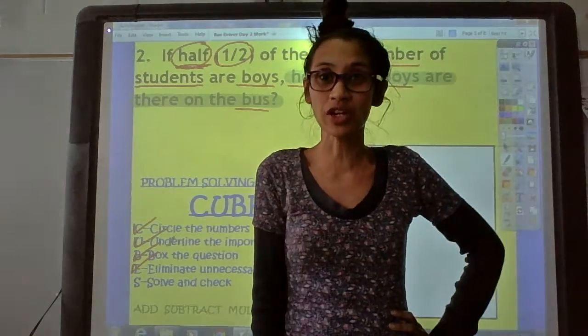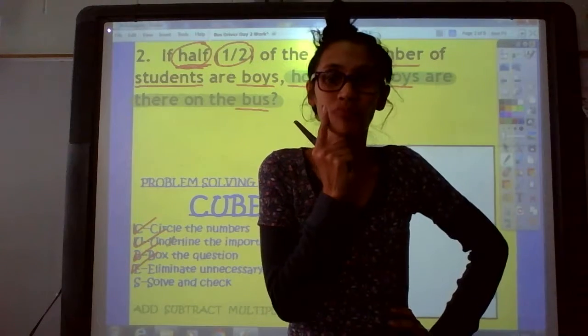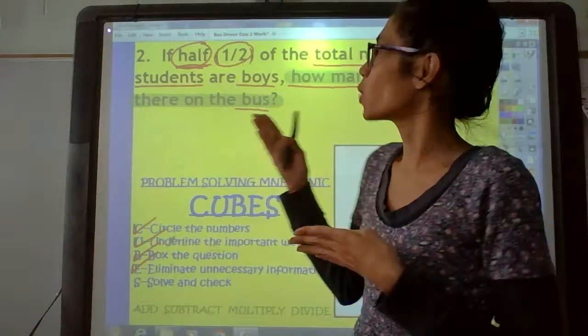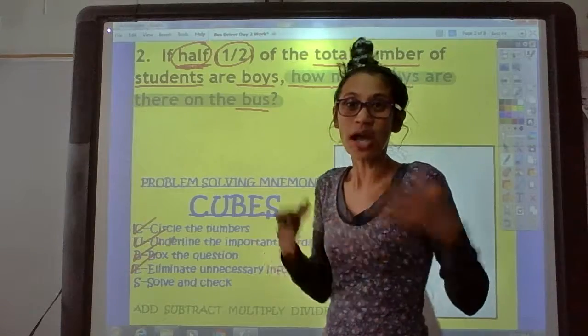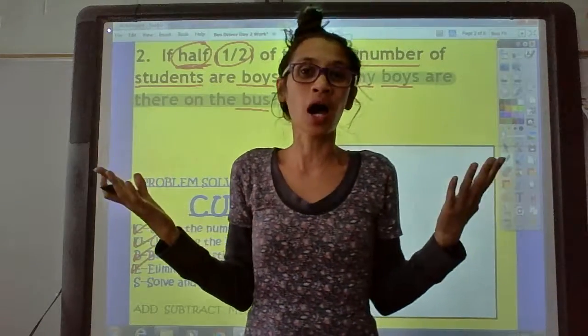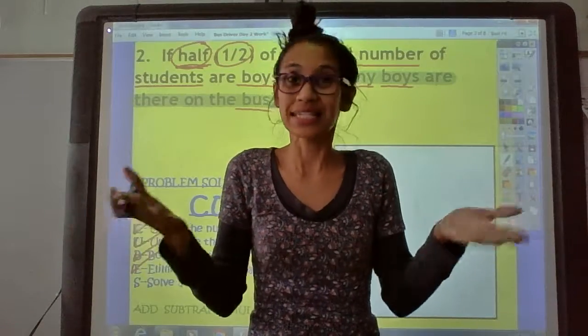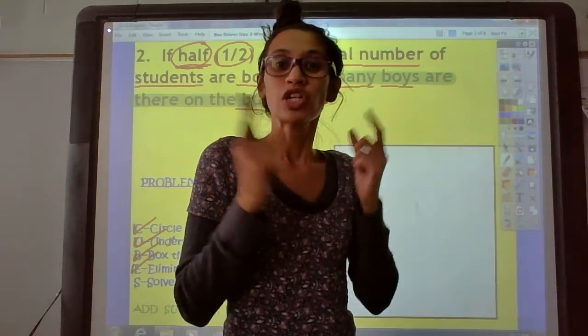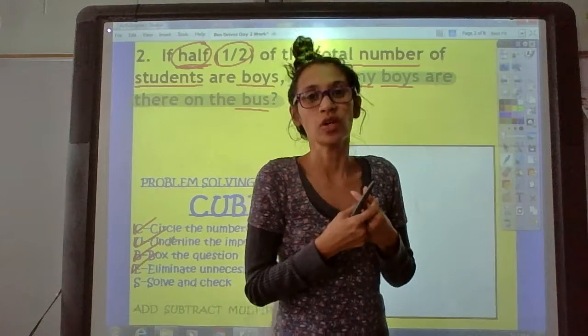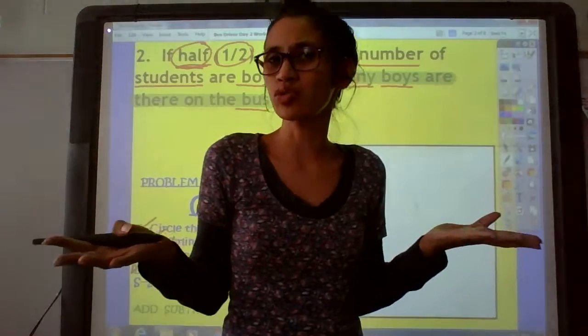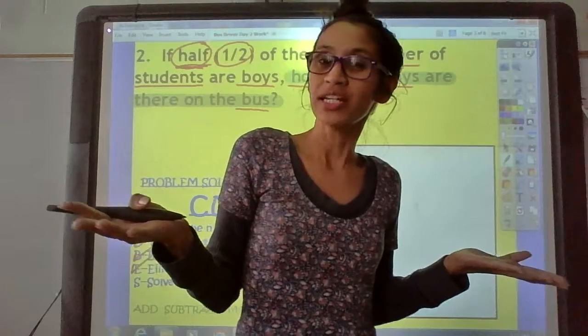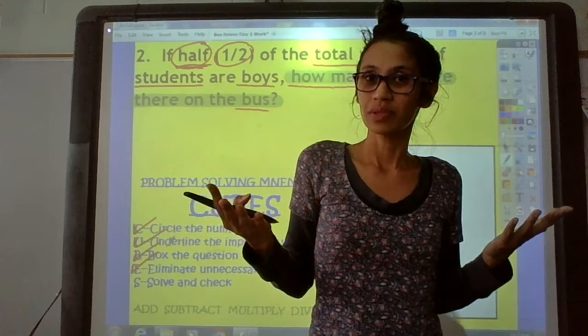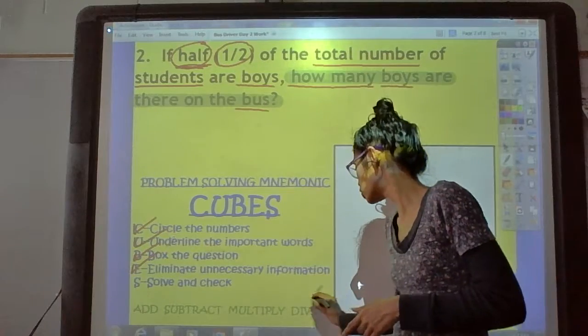So, think about it. Are we adding, subtracting, multiplying, or dividing? Look at the question. It says if half of the total. So, half, for example. What is half of 14? Half of 14 is 7. What is half of 50? Half of 50 is 25. What is half of 1,000? Half of 1,000, do you know? It's so easy. 500. Now, I know you can do that mentally. What operation did you use to figure that out? You actually divided. That's right. You divided.